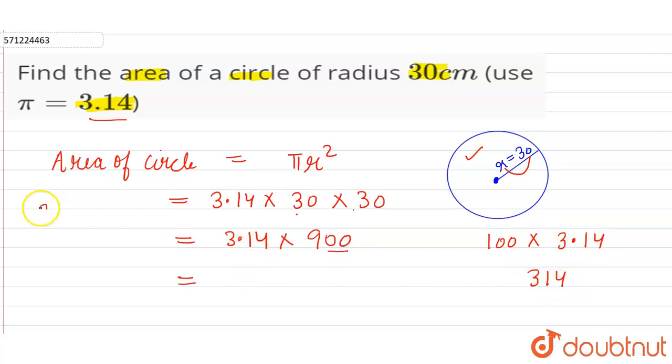So here 9 into 4 is 36, 9 into 1 is 9, 10, 11, 12, 1 carry, 9 into 3, 27, 28. So the answer to this question will be 2826.